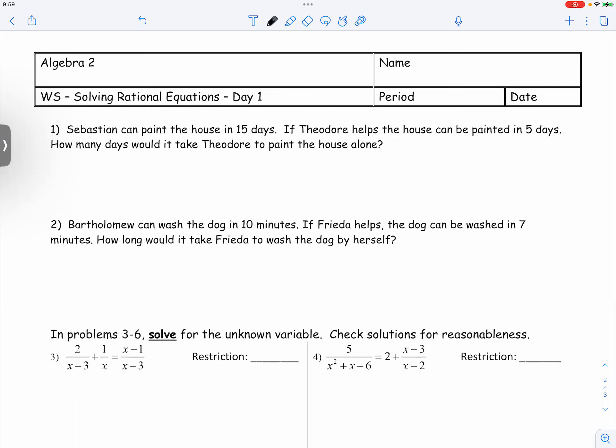So that means we have the rate of Sebastian, which is 1 over 15. And we want to find out the rate of Theodore, which is 1 over X. And that's equal to 1 over 5. So that would be the rate together, 1 over 5.